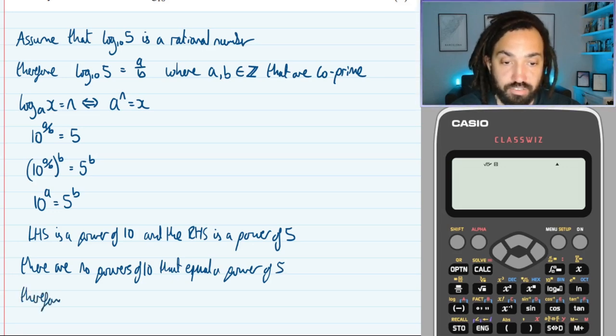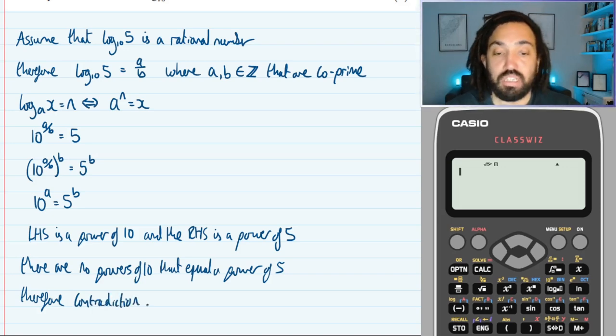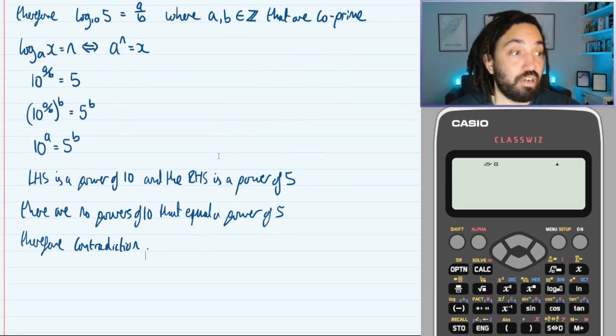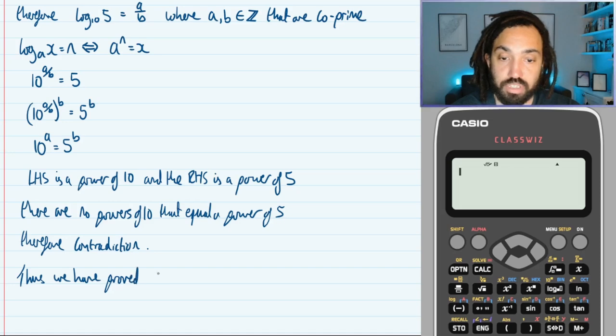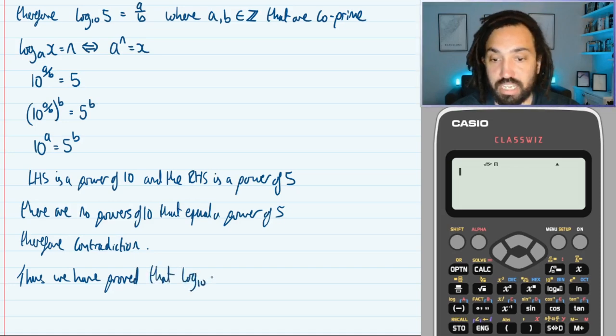Therefore, we have reached a contradiction. And we must say now—and this is really important—we must say, thus we have proved that log base 10 of 5 is irrational.